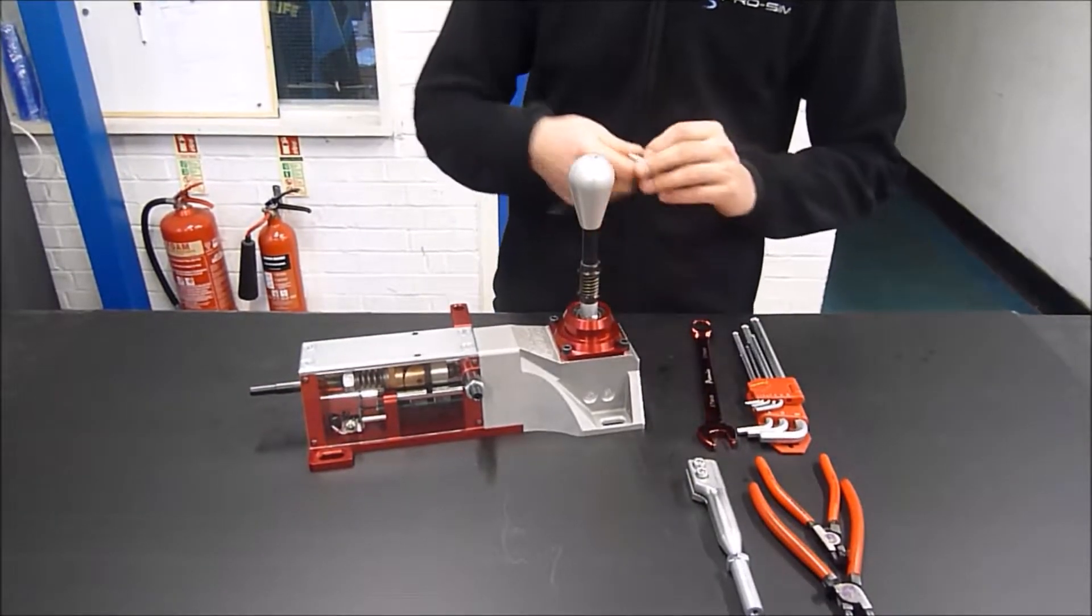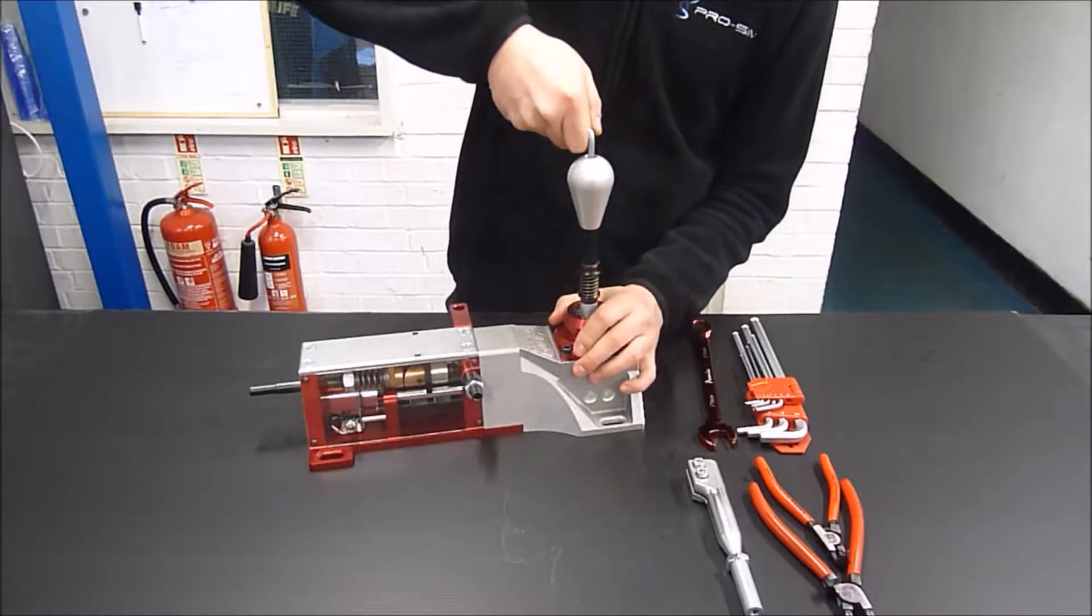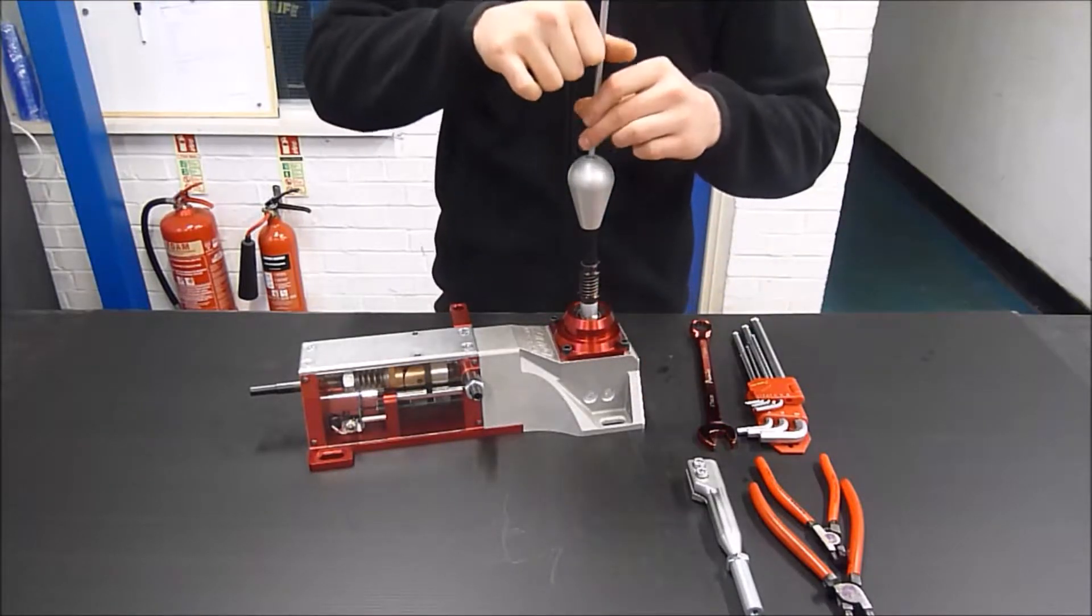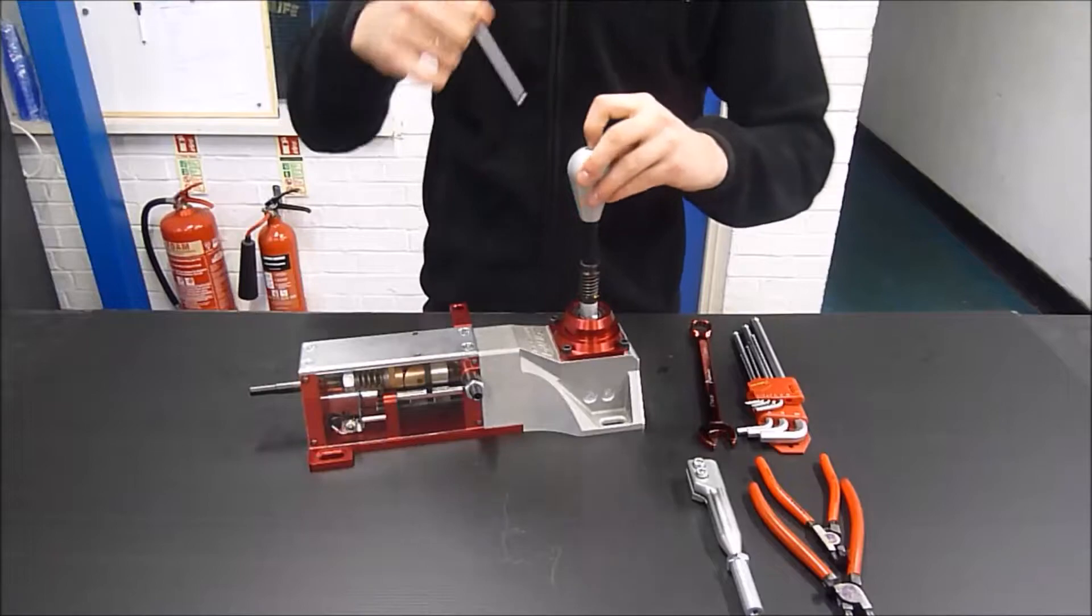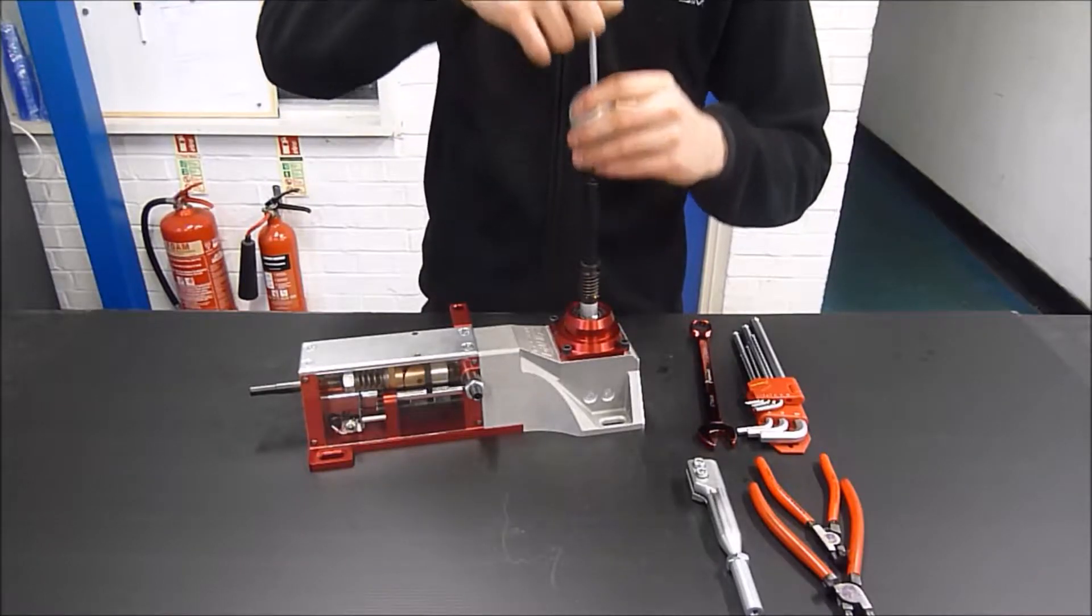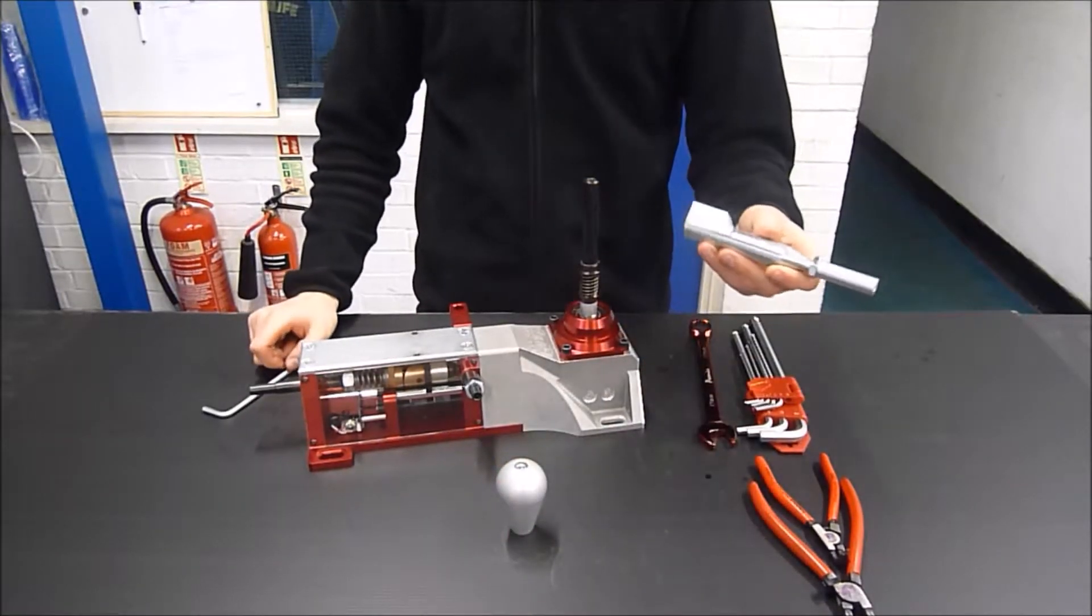What we need is a 5mm Allen key to remove the existing gear knob. Once that is off we can put that to one side.